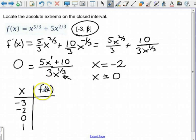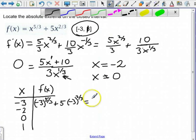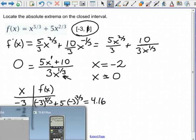Now remember, we're doing this into f(x), not f prime of x. So this is going to be negative 3 to the 5 thirds power plus 5 times negative 3 to the 2 thirds power. Let's get our calculator in here and we'll turn it on. And that's going to be parentheses negative 3 raised to the 5 thirds power plus 5 parentheses negative 3 parentheses raised to the 2 thirds power. And we get out 4.16.